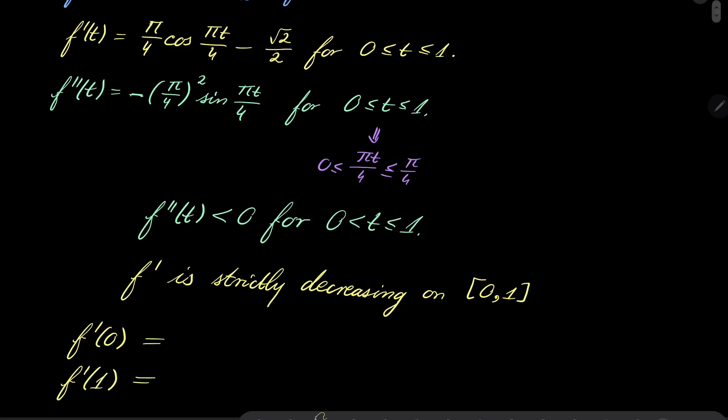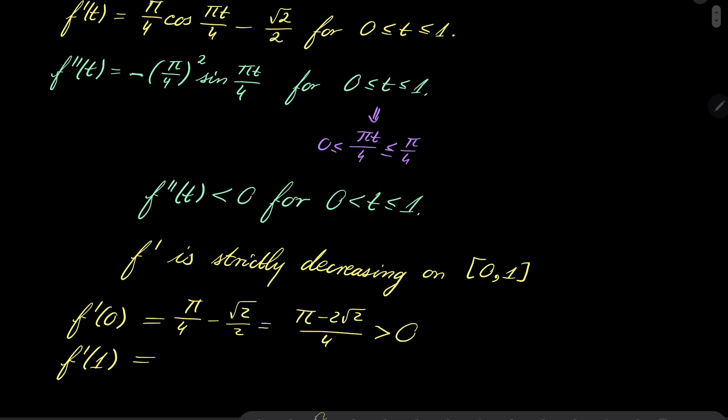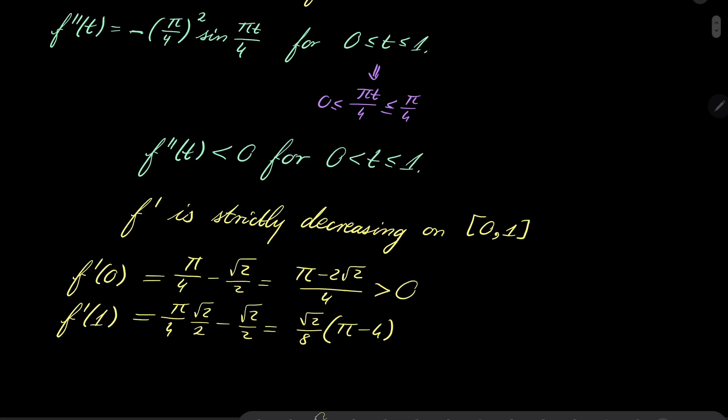What's f'(0)? It's π/4 - √2/2, which equals (π - 2√2)/4 and is definitely greater than 0 because π ≈ 3.14 and 2√2 ≈ 2.8. What is f'(1)? Well, f'(1) is (π/4)·√2/2 - √2/2 = √2(π - 4)/8 which is definitely less than 0.